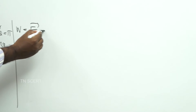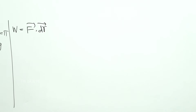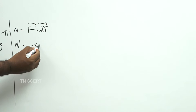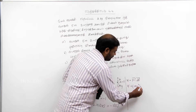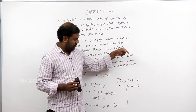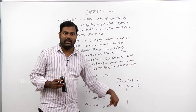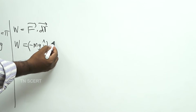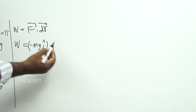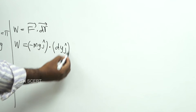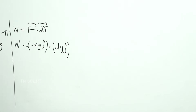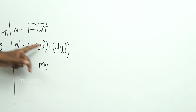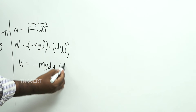W is equal to f dot dr. F is minus mg j-cap. The force is called the gravitational force. Dr is displacement in the y-direction, so dr is dy j-cap. So this gives minus mg dy into j dot j.